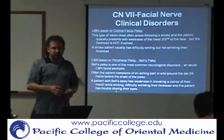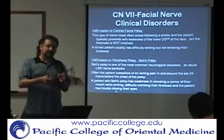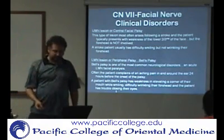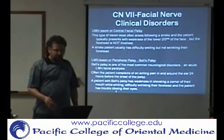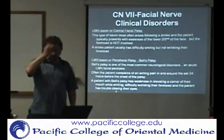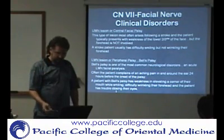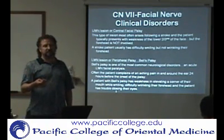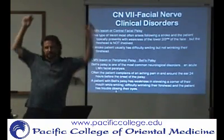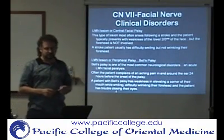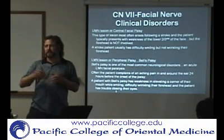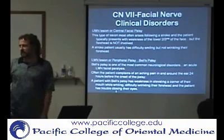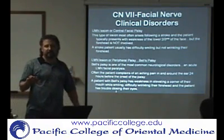An upper motor neuron lesion would be something like a stroke or a brain problem. With motor nerves, you have the upper motor neuron coming from the cerebral cortex, and the lower motor neuron going to the actual muscle. The upper motor neuron lesion usually presents in the lower parts of the face. Quick stroke recognition tests include asking them to speak, smile, or raise their arms — because the sooner you recognize a stroke, medications can reverse it or prevent permanent damage.